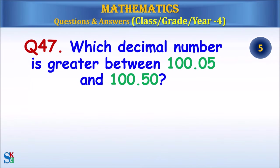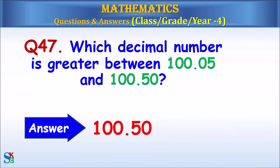Question 47: Which decimal number is greater between 100.05 and 100.5? The answer is 100.5.